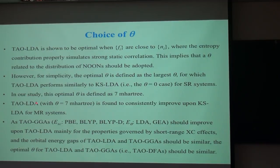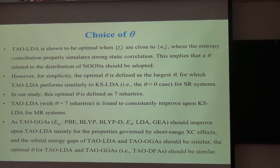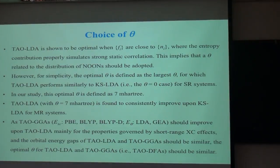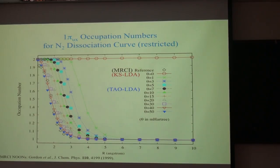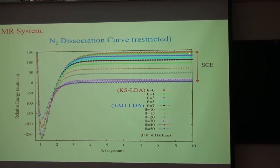In our study, the optimal C_dot is defined as 7 milli-Hartree, which is approximately 0.2 eV. Tau LDA with C_dot equal to 7 milli-Hartree is found to consistently improve upon constrained LDA, even for multi-reference systems. It may not be fully optimized, but it consistently improves results for multi-reference systems, reducing the error even when not optimized.